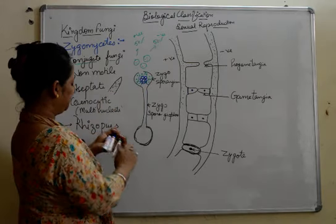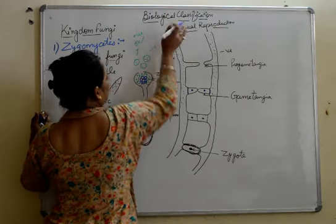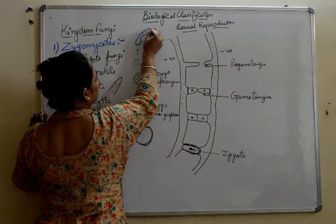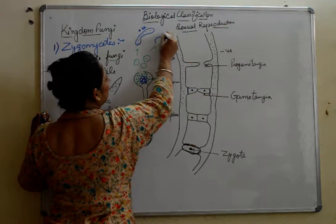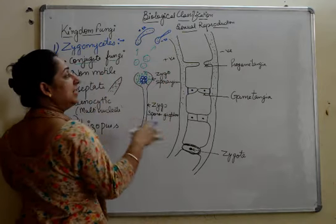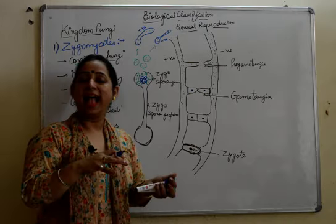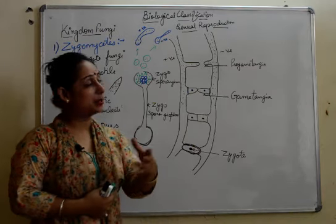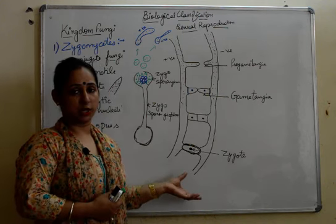The positive strain spores are going to germinate and give rise to positive hypha, considered as male, and the negative ones will also germinate to give rise to negative hypha. Finally, they form that vegetative structure where both asexual reproduction — spore formation — and sexual reproduction — conjugation — can take place.